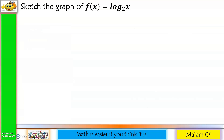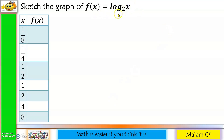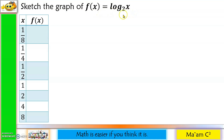Let us start graphing f(x) = log base 2 of x. So let's have a table of values. Remember that in logarithms, x should be greater than 0. So I have here values of x that are greater than 0, and we are going to solve for f(x) or y by substituting each value of x. Let's start with 1/8: f(1/8) = log base 2 of 1/8.